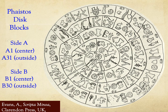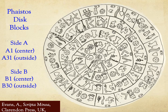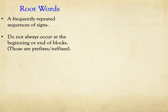The Phaistos disk inscription is divided into two sides. Each side is further divided into blocks. Side A, which is shown here, has 31 blocks, while side B has 30 blocks. Following earlier work, we number the blocks and read the inscription from the center to the outside of the disk. We then identify the root words in the inscription — root words are frequently repeated sequences of signs that do not always occur at the beginning or end of the blocks.